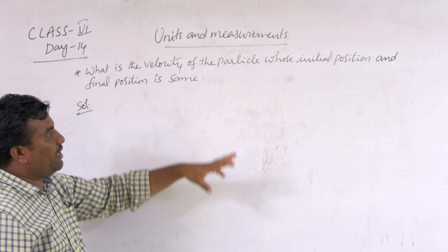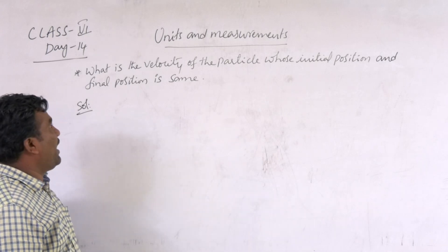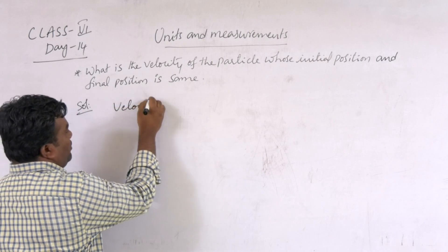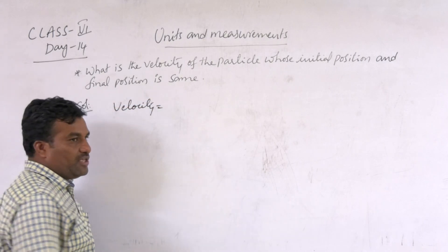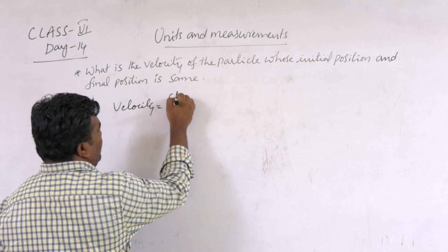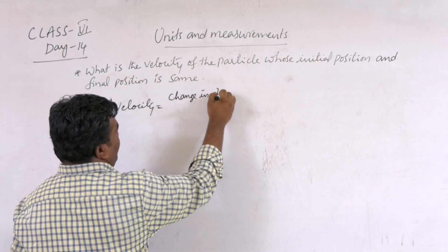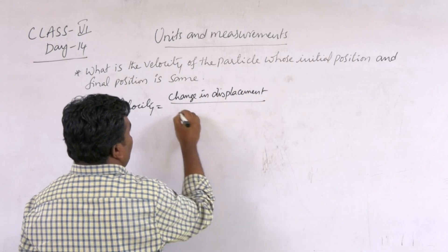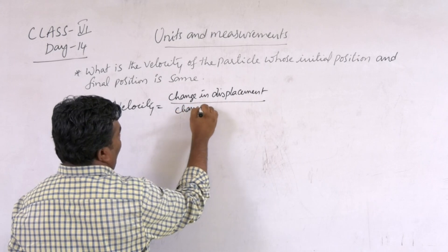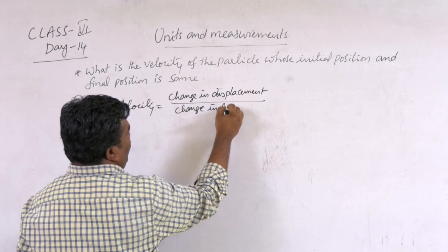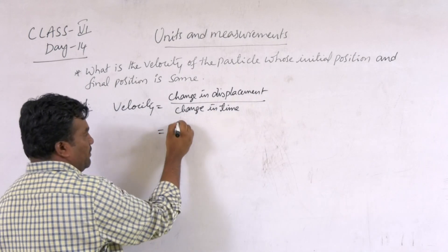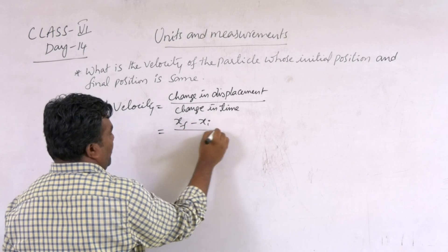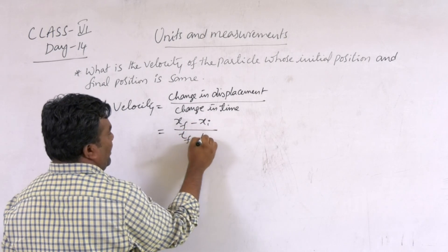What is the velocity of a particle whose initial position and final position is the same? What is the definition? Velocity equals change in displacement divided by change in time or time interval. So the displacement is x final minus x initial divided by t final minus t initial.